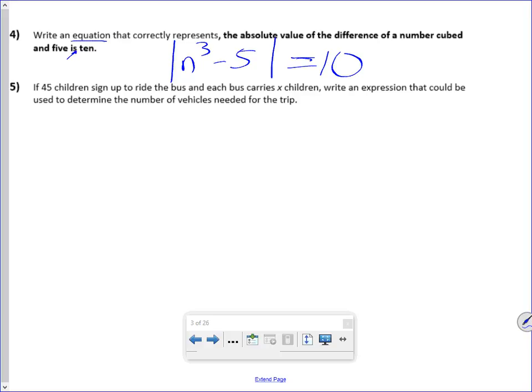45 children sign up to ride the bus, and each bus carries x children. Write an expression that could be used to determine the number of vehicles needed for the trip. So there's 45 kids, and we're going to divide that by the number of people that can fit on a bus.